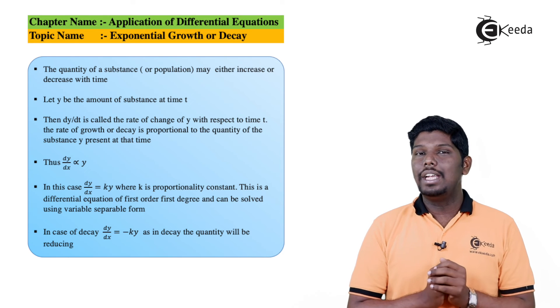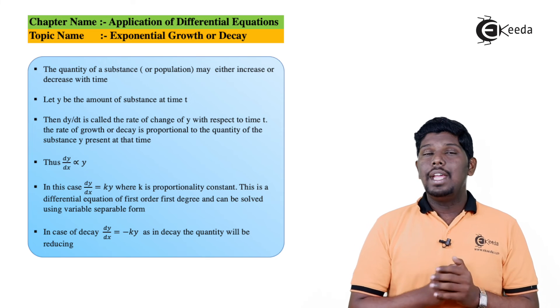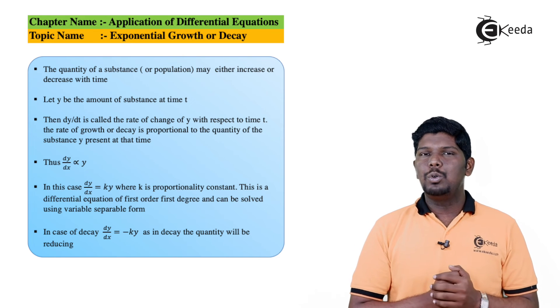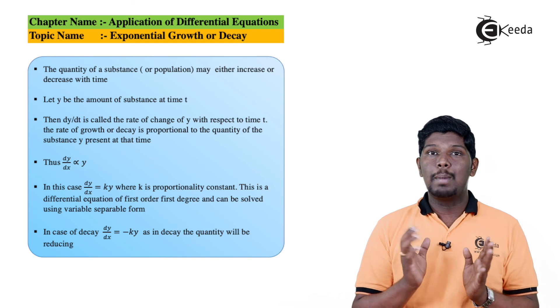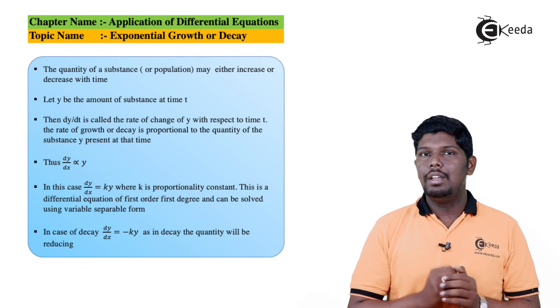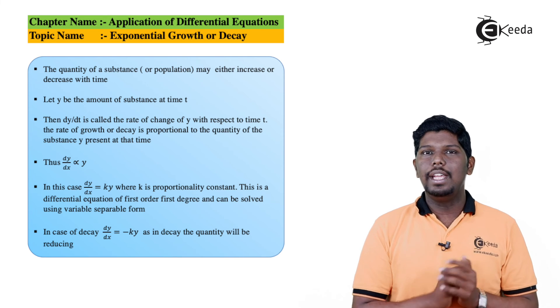So if I say we have a radioactive substance and its quantity is y at a time t, then we can say the change in mass with respect to time t, like dy by dt, is directly proportional to its original mass y. Now to remove this proportionality sign we are going to write it here as minus k, as the mass is decreasing but not increasing.